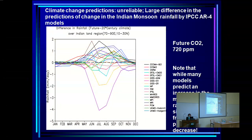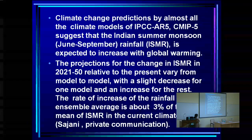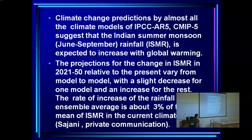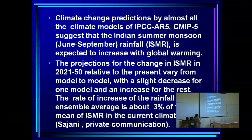Dr. Sajani Rajendran at C-MMACS analyzed data for IPCC AR5: almost all models now show an increase in ISMR, except for one, out of approximately 20–25 models examined. The projections for the change in ISMR by 2150 relative to the present vary from model to model with only a slight increase for one model but increases for the rest. However, there is a huge spread in the rate of increase. The ensemble average suggests about a 3% increase in mean ISMR over roughly the next 30 years, but the spread is so large that the ensemble mean is not very meaningful.